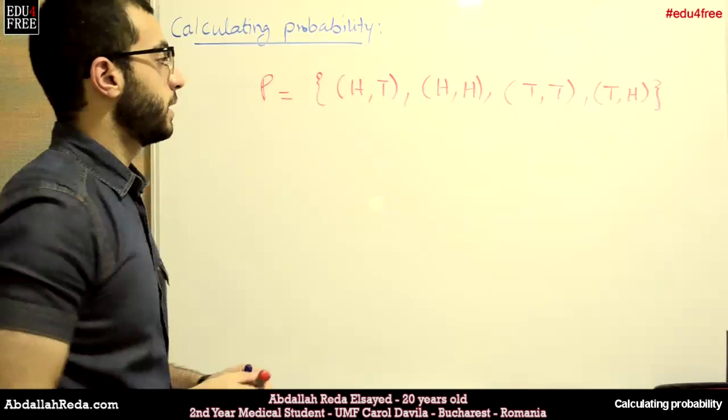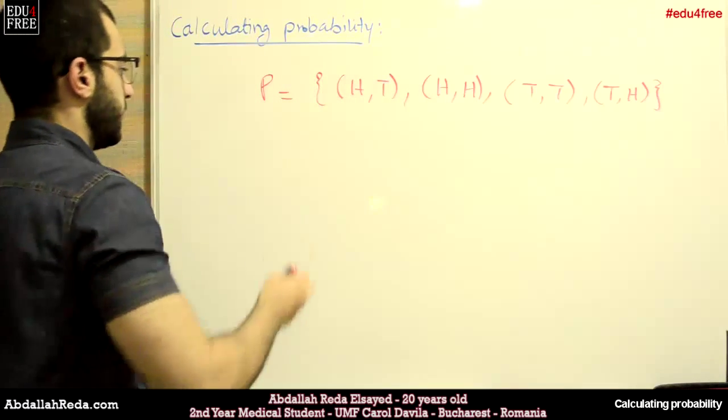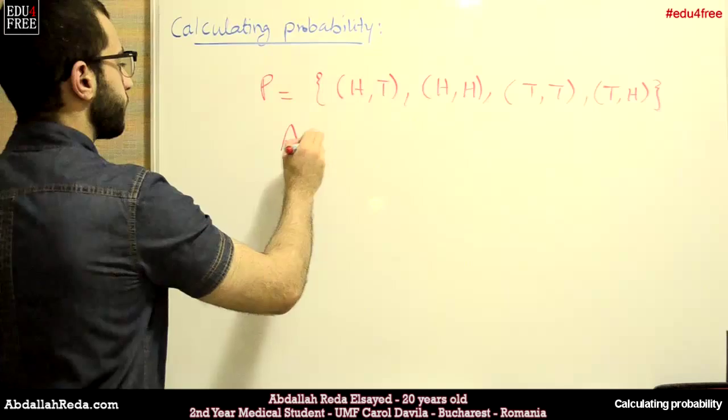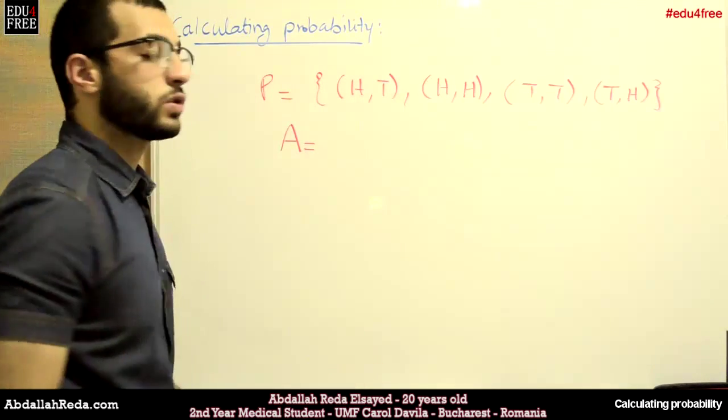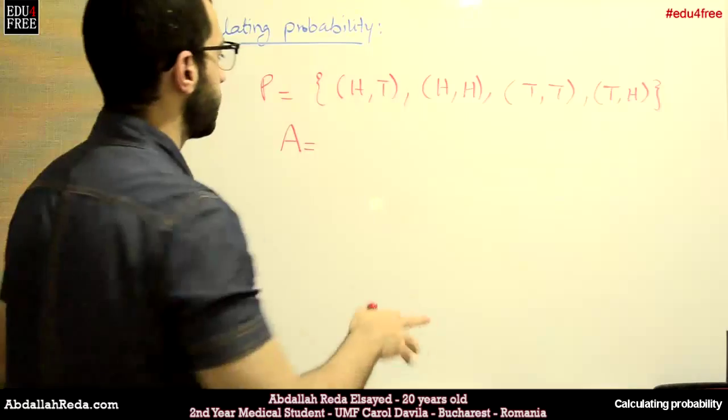So this is the sample set. And then we have this event A. And A is the event of the appearance of at least one head.